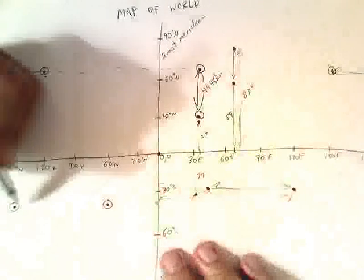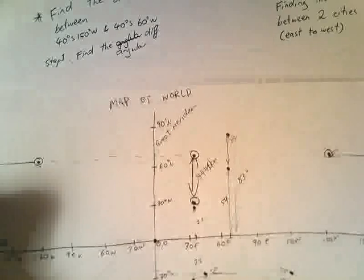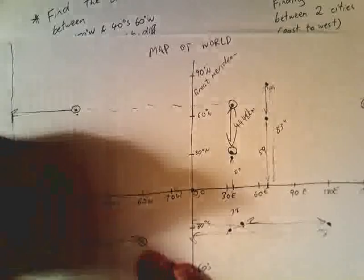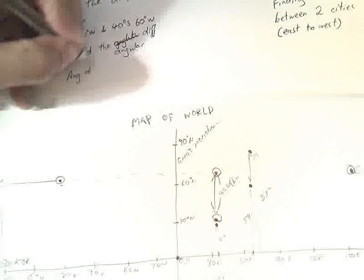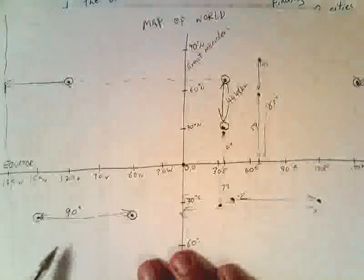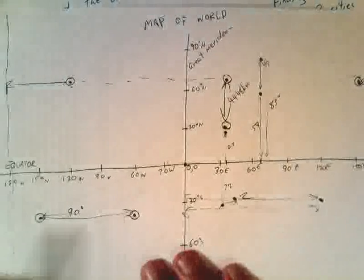So we need to first find the angular difference between this point and this point. If this is 150 degrees west and this is 60 degrees west, then this difference, the angular difference, is going to be equal to 150 minus 60. So that's going to be an angular difference of 90 degrees. There's a difference here of 90 degrees between those two points.